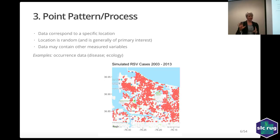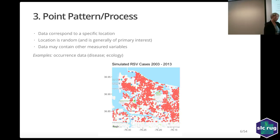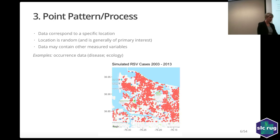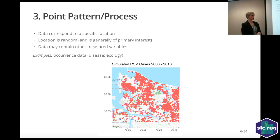The third type of data is point pattern or point process data, where the location is random. We have RSV data — we actually had to simulate this due to privacy concerns, which I'm sure IHC people are aware of. We simulated it based on the data we were looking at, looking at a region in Norfolk and the occurrence of where an infant RSV case pops up. The location is what's random, not the response. There's also marked point pattern data, where we have covariates or variables that correspond to the random location.